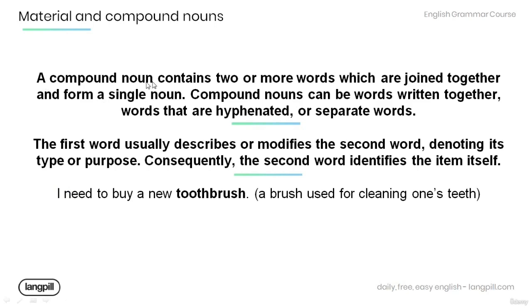Now a compound noun contains two or more words which are joined together and form a single noun. Remember that compound nouns can be words written together, words that are hyphenated, or separate words. The first word usually describes or modifies the second word, denoting its type or purpose. Consequently, the second word identifies the item itself.